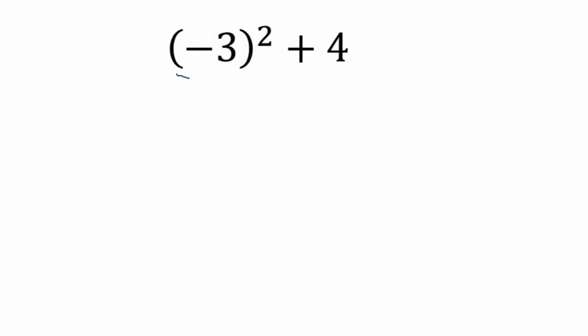So if I was to write this out, what this is telling me to do is take negative 3 and square it. In other words, take the negative sign and the 3 and multiply it 2 times, 1, 2. Then after that I'm going to add 4.